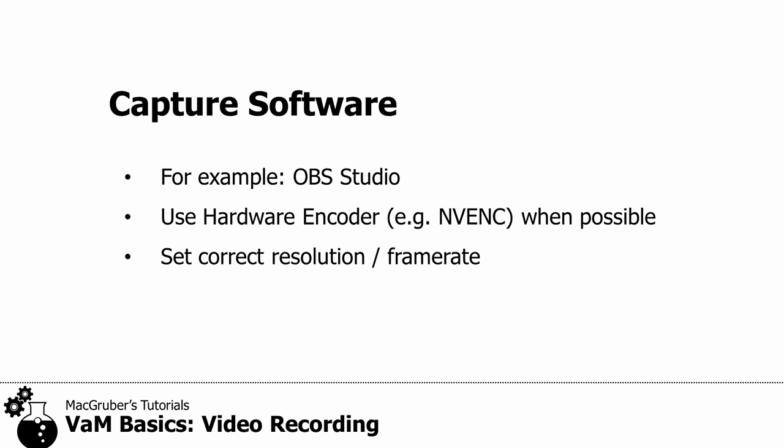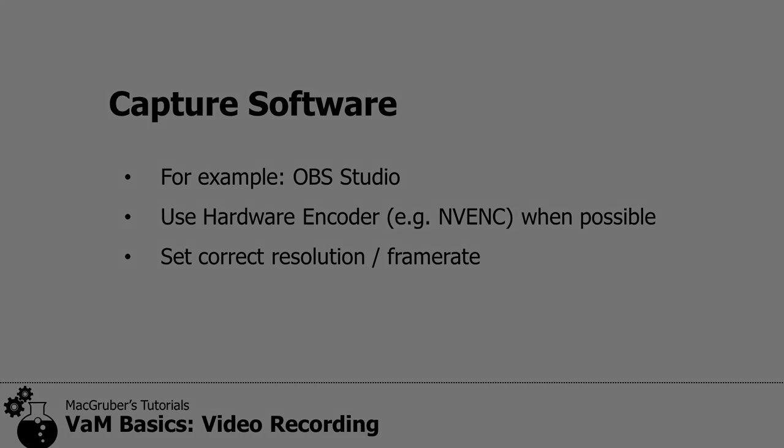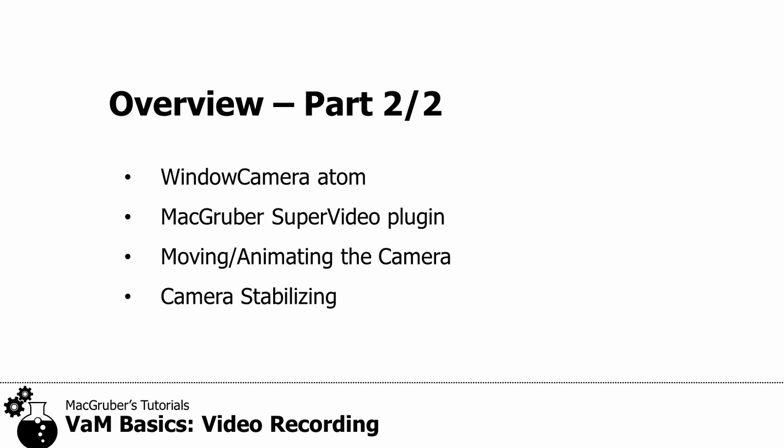A few words on capture software: you can use pretty much any software you want. For the things I'm doing I use OBS Studio, which is mostly used by streamers. The really important thing is to make sure your software uses the hardware encoder chip on your graphics card — you don't want to encode video on your CPU. If you have an NVIDIA card, set it to the NVENC codec. Also obviously set your capturing resolution and frame rates to match what you set before in VAM. This concludes the first part of the tutorial. The second part will be a separate video looking at the window camera item, my super video plugin, how to move and animate the camera, and camera stabilizing — interesting if you want to motion capture the camera movement.